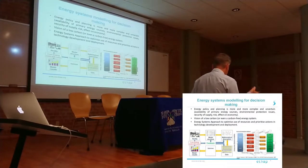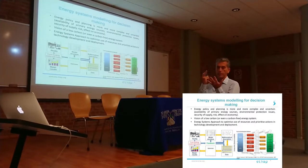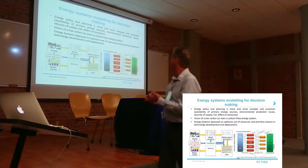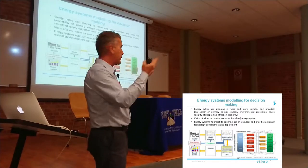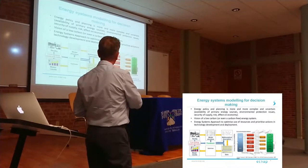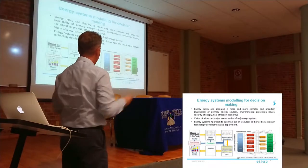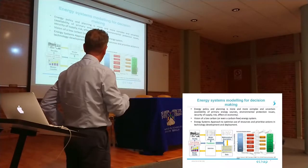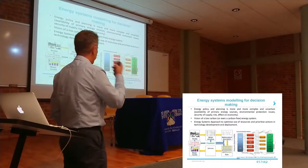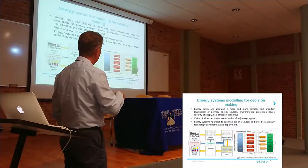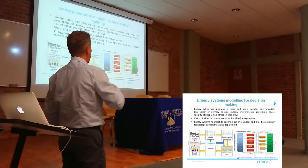What is the need for energy systems modeling? David was talking about the complexity of energy systems and how it needs to incorporate a lot of parameters. We're talking about primary energy sources, risks, effects on the economy, environmental protection, and on top of all this, a low carbon energy system. All these interactions have to be included in an energy systems approach, covering the whole energy system — from primary energies and resources through transformation to final energy, consumption sectors, flows of energy, prices, investment costs, and emissions.